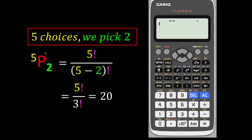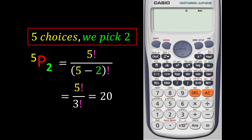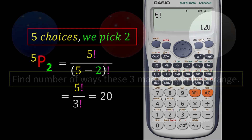To compute permutations on a calculator: press 5, then Shift × 2 to get 5P2. For factorials, press the number, then Shift and the x⁻¹ key. For example, to compute 5! / (5−2)!, press 5 factorial, divided by bracket (5 minus 2), then factorial again. On different calculators, the factorial function may be in a slightly different location but works the same way.